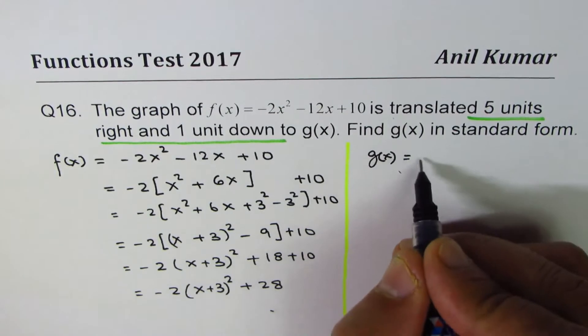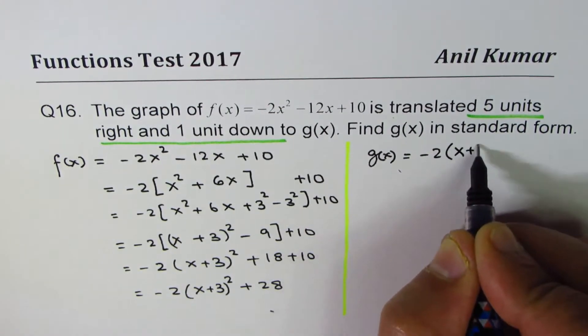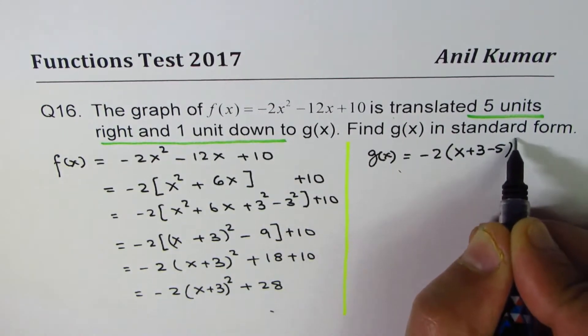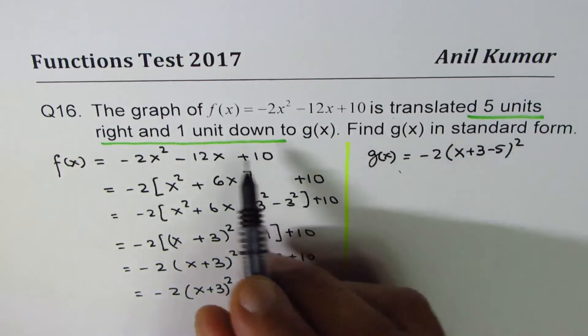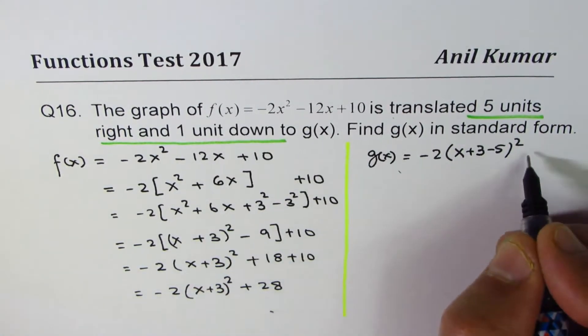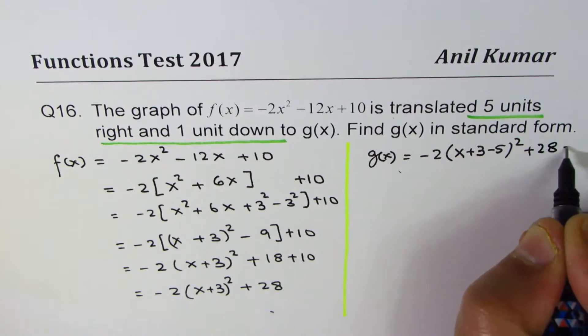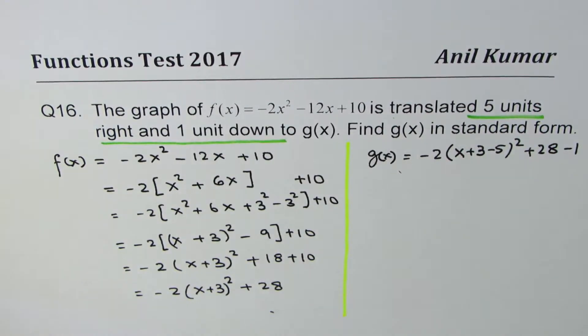We have -2(x + 3 - 5)² for five units right. One unit down means +28 - 1. So that's how we should be working.